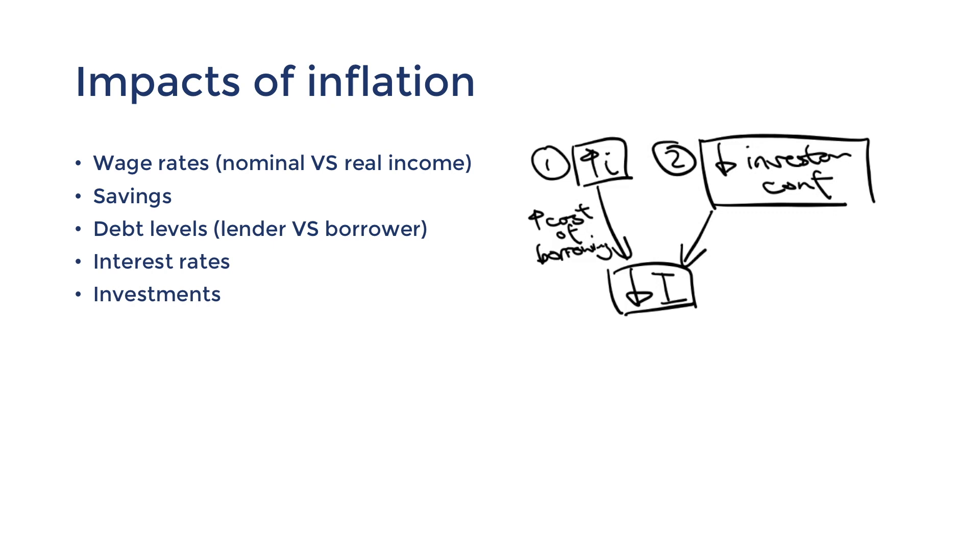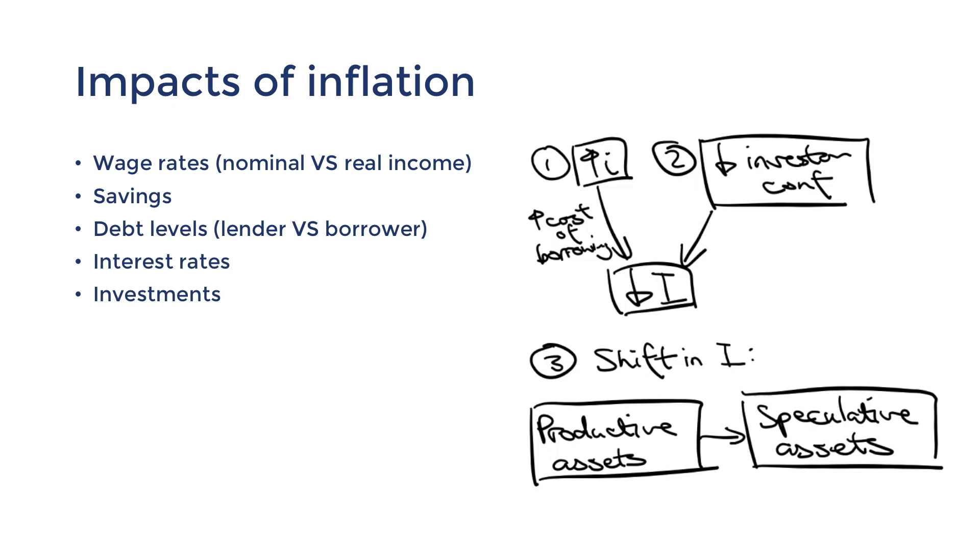Another way that inflation could impact investment is by causing a shift in the types of investment. Investors would withdraw from productive investments, such as expanding businesses, and instead put their funds into speculative inflating assets, such as existing property. This shift could mean lower productivity in the economy and further inflation of asset prices.